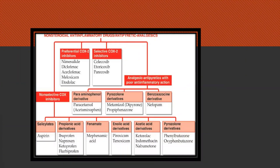Class 1 is non-selective cyclooxygenase inhibitors, which includes salicylates, propionic acid derivatives, phenamates, enolic acid derivatives, acetic acid derivatives, and pyrazolone derivatives. Class 2 is preferential COX-2 inhibitors, which includes drugs like nimesulide, diclofenac, and aceclofenac. Class 3 is selective COX-2 inhibitors, which includes celecoxib and parecoxib. The last class is analgesic antipyretics with poor anti-inflammatory action, including the paraaminophenol derivative paracetamol, pyrazolone derivatives, and benzoxazocine derivatives.